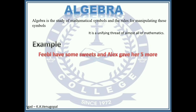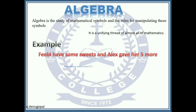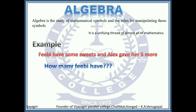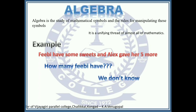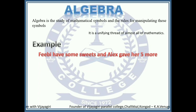Phoebe has some sweets and Alex gave her 5 more. How can we use algebra to express this statement? How many sweets does Phoebe have? That is not mentioned in the question, so we don't know how many she has — it is an unknown number. In this situation, we use a symbol to represent that unknown number. It can be any letter, but the commonly used one is x.